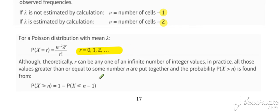So theoretically, R can take any one of an infinite number of integer values. In practice, all those values greater than or equal to some number are put together because the probabilities are going to get fairly small at the top end. So what you basically do to work out the value in the last cell is you just take all the others away from one. So you're kind of using this idea over here.